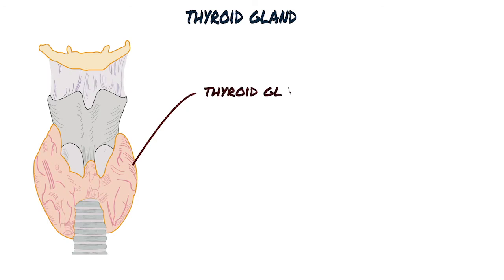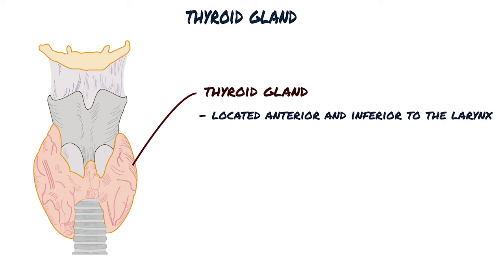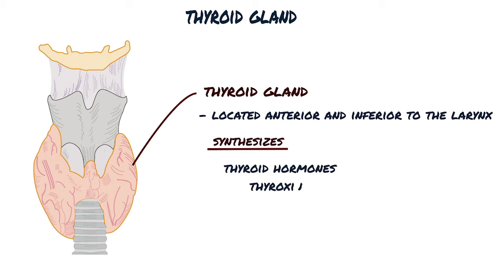The thyroid gland, located anterior and inferior to the larynx, consists of two lobes united by an isthmus. It synthesizes the thyroid hormones thyroxine (T4) and triiodothyronine (T3), which help control the basal metabolic rate in cells throughout the body, as well as the polypeptide hormone calcitonin.